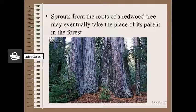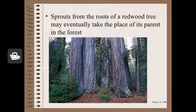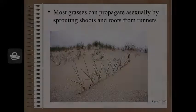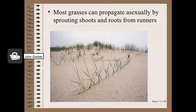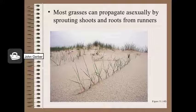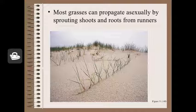Even large redwood trees can produce new trees vegetatively. Notice the baby redwoods at the base of the mother trees — they come up from sprouts that begin in the roots of the large tree. Mother nature often uses vegetative reproduction to produce new plants. Here is a runner producing new grass plants. Notice the dried or non-green stem connecting each of the plants as it moves across the sand.